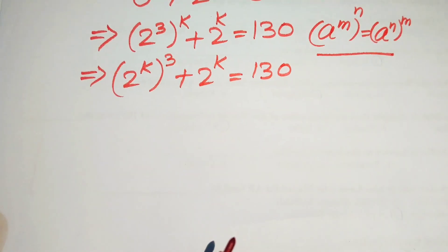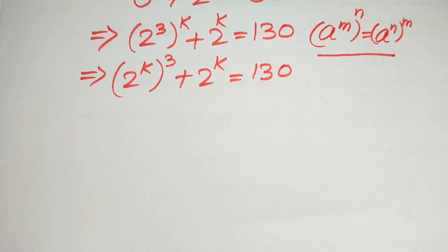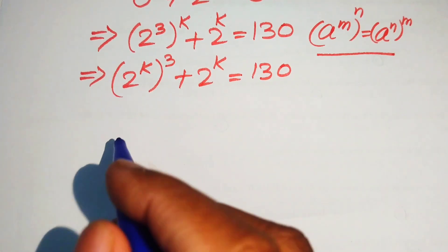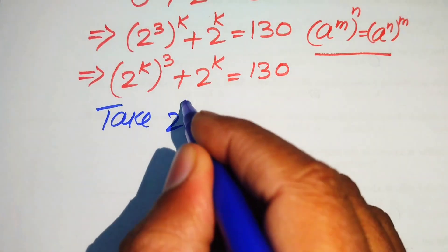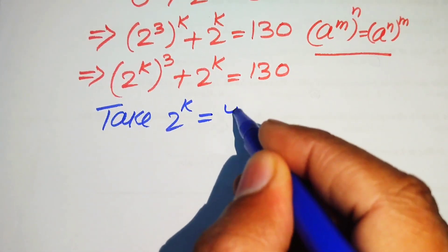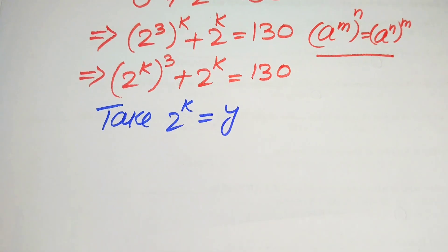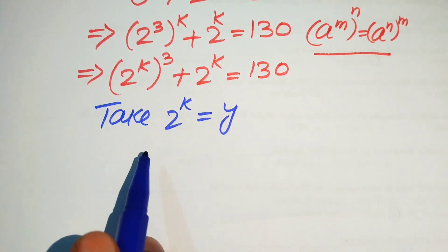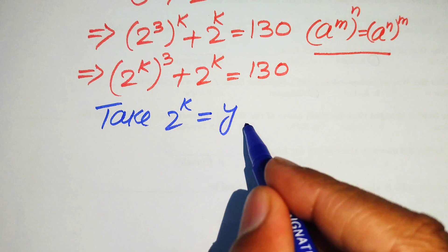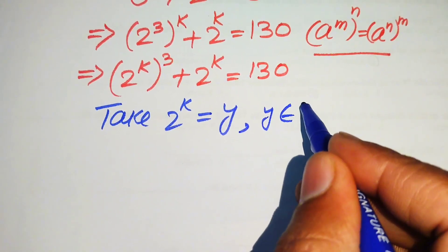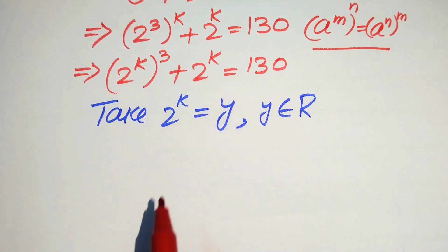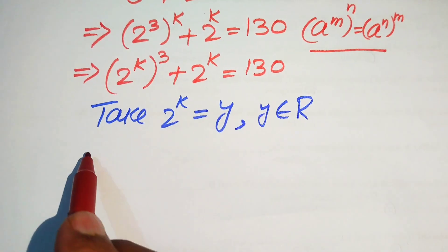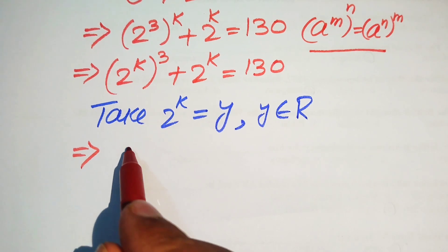Now you see here we have 2 to the power of k as the common term, so we take 2 to the power of k equals y. Because we solve this problem for the real values of k, it means that our y is also a real number.